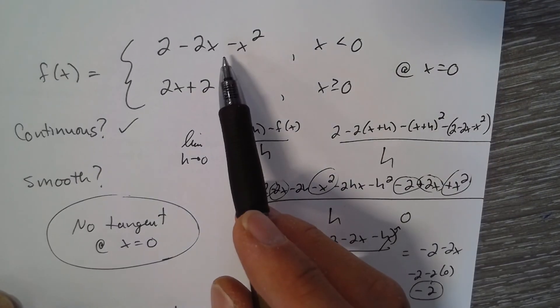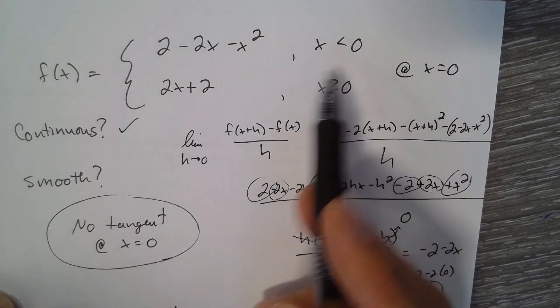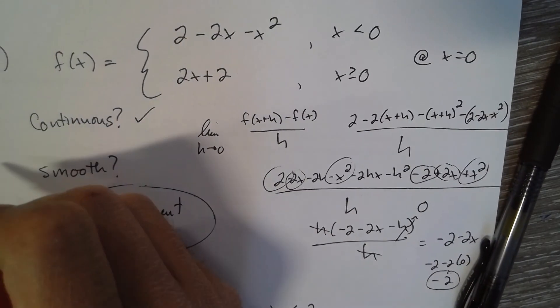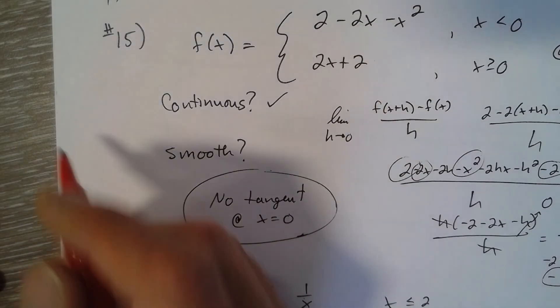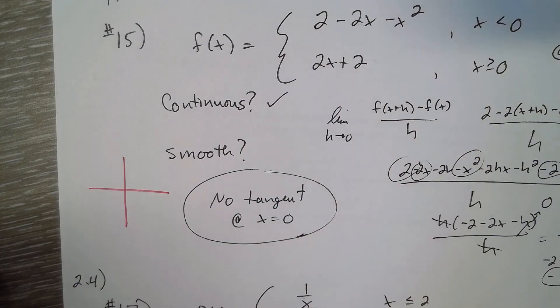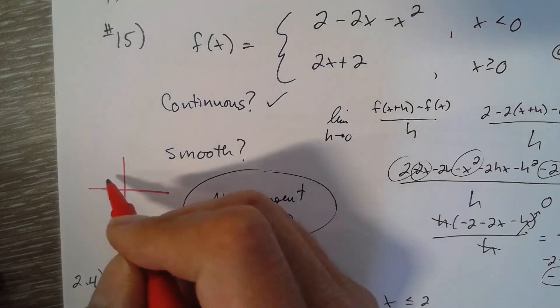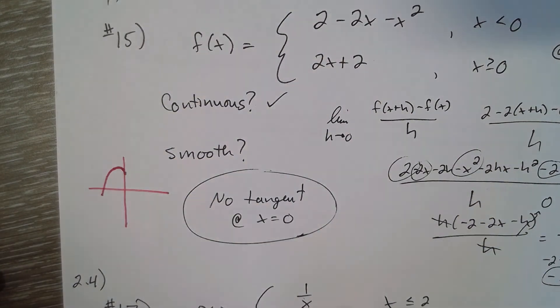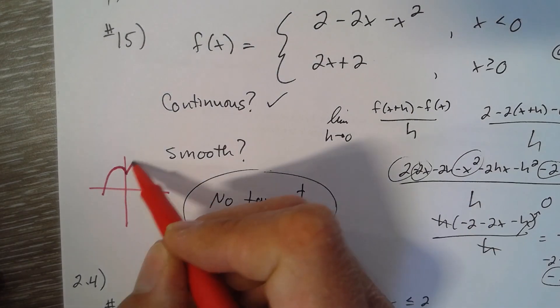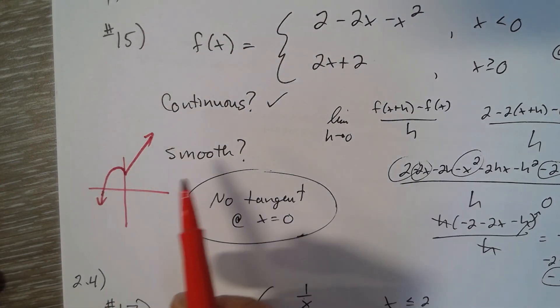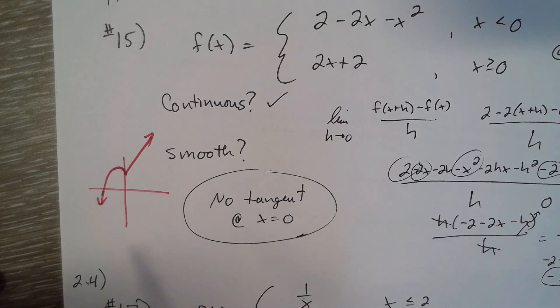If we look at the graph, this is a parabola. At zero it's at the point (0,2). This one has a slope of negative 2, so it's probably looking kind of like this. Then this one, 2x plus 2, goes like this. You can see that is not a smooth curve here. There's a corner, so the derivative doesn't exist, so there's no tangent.